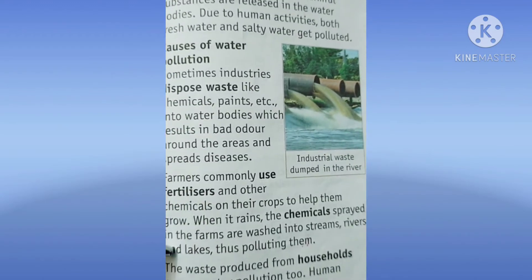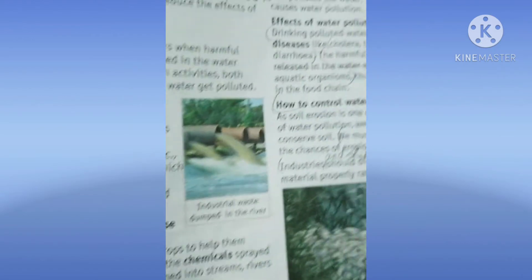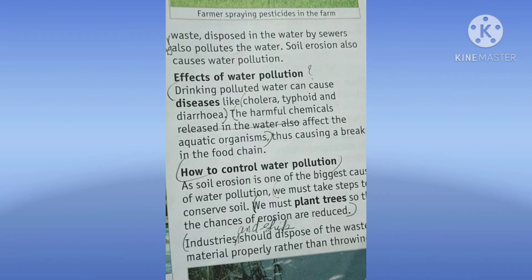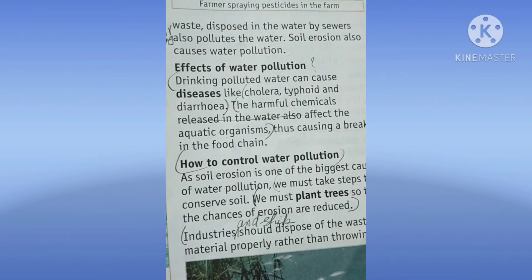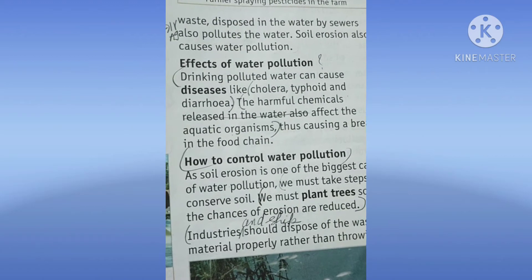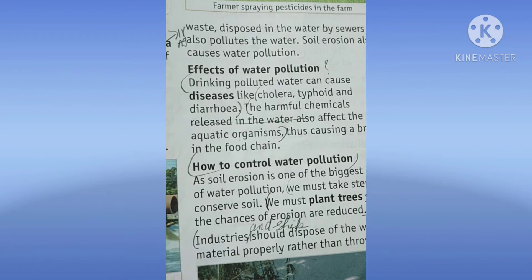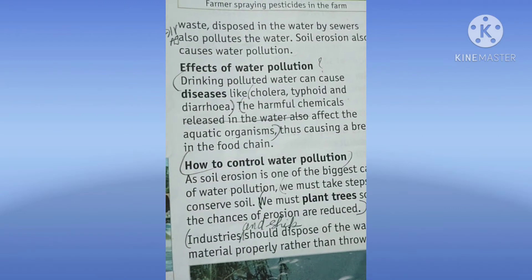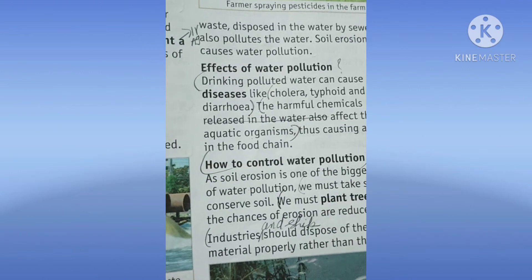Third is, the waste produced from households causes water pollution too. Human waste disposed in water by sewers also pollutes the water. Soil erosion also causes water pollution. Humaree ghar se jo waste nikalta hai that causes water pollution. And soil erosion — mitti jo cut jaati hai — woh water mein mix ho jaati hai, that also causes water pollution.